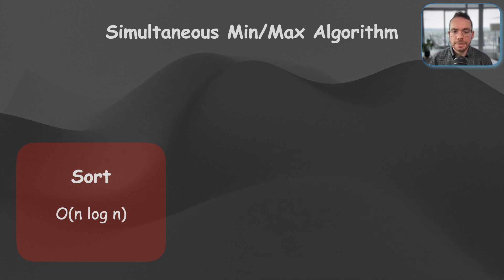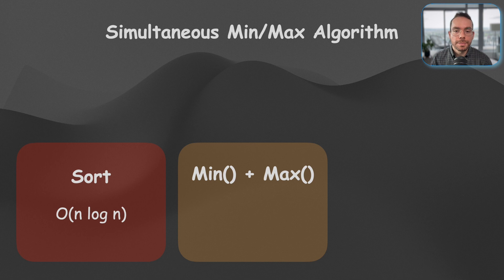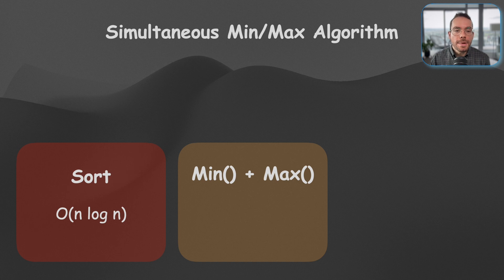But wait, there is a linear one. We could just actually call the built-in min and max separately. However, they will work individually on this problem, and they are not optimized for simultaneous min and max calculation.